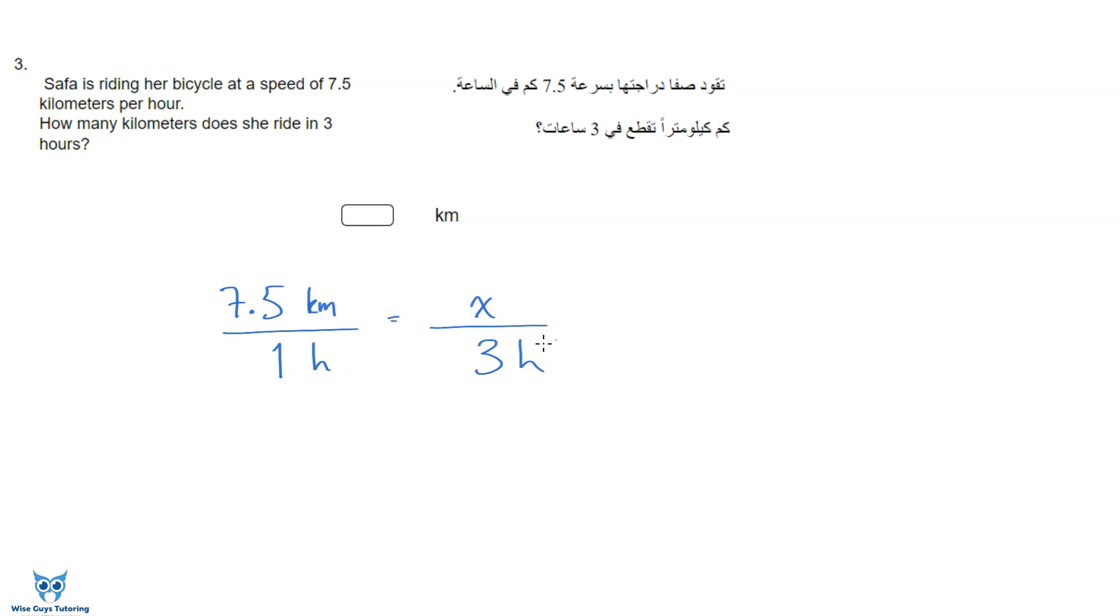So if she rides 7.5 kilometers in one hour then she's going to ride three times as long when she does three hours. If you want to solve this proportion all I have to do is get x alone. It's being divided by three so I'll multiply both sides by three. This one will undo this one and I'm going to be left with 7.5 times 3 over 1 is equal to x and 7.5 times 3 over 1 that means that x is going to be equal to 22.5 kilometers.